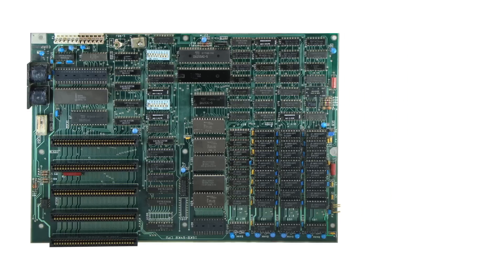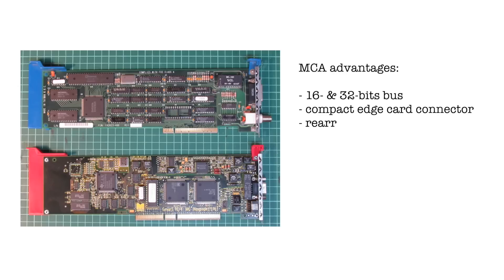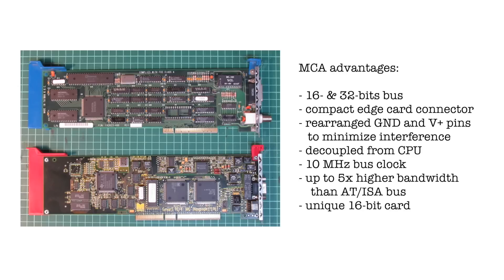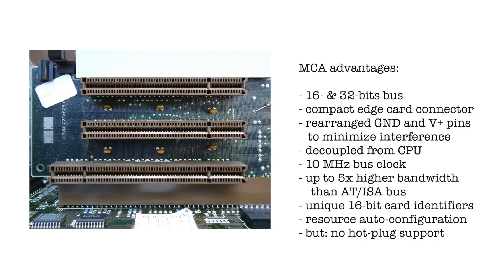The original PC architecture also had its flaws and limitations, which called for better solutions, especially when it came to the dated AT-Bus. So IBM introduced the so-called Micro-Channel Architecture with their PS/2 lineup. It was the answer to all problems: not only did it decouple itself from the x86 dependency, but also introduced an improved edge card connector system, adding better grounding and power distribution. It also introduced a 32-bit wide bus running at 10 MHz, which increased the attainable speed up to a factor of 5 when compared to the ISA bus.